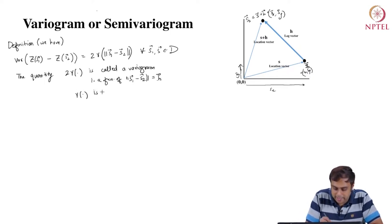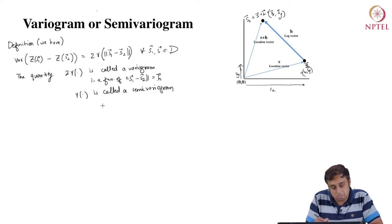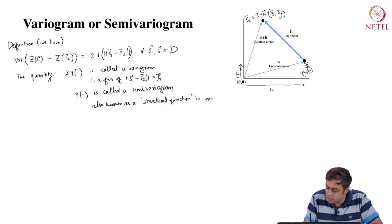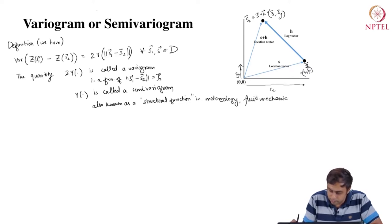The quantity 2·gamma(S1 minus S2) is called a variogram. It is a function of S1 minus S2, which is the definition of vector H, the lag vector. Gamma by itself is called a semi-variogram. By convention, it is also known as a structural function in meteorology, fluid mechanics, and so on.